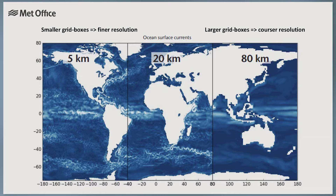Here is the model's representation of ocean currents at different resolutions. The output on the right uses larger 80-kilometre grid boxes, which is a relatively low resolution, and the output on the left uses smaller 5-kilometre grid boxes and so has a higher resolution. Much more detail is captured in the high resolution case, just like a high resolution television or photograph. However, the downside is that higher resolutions require more computational power and don't necessarily provide a more accurate forecast.